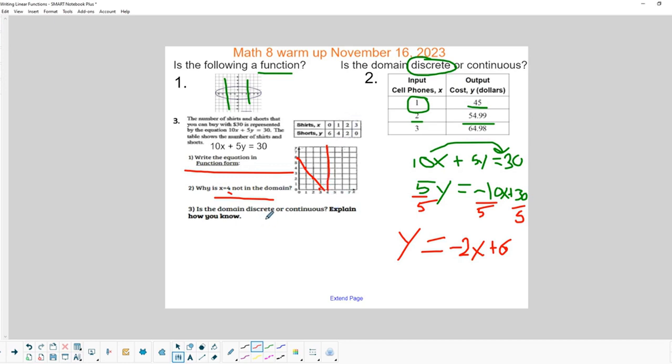Okay, is the domain discrete or continuous in this particular situation? Well, because we're talking about individual pairs of shorts or individual shirts, and individual amounts of money, this would be considered discrete. And there we go. Okay, so let's go on to the next one.